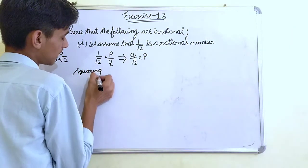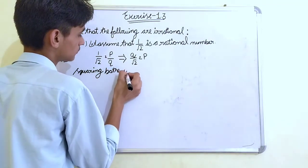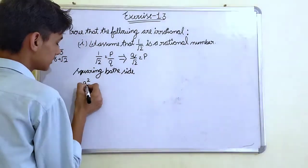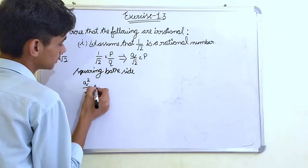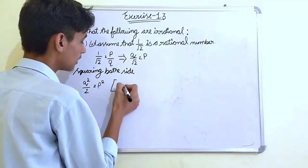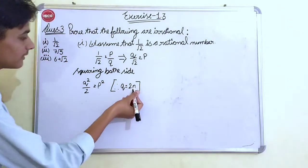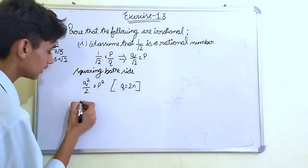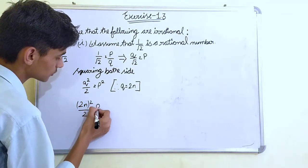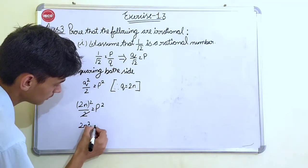Squaring both sides, Q square by 2 is equal to P square. From it, we conclude that Q is equal to 2N. We will put the value of 2N here, means the Q here. 2N whole square by 2 is equal to P square. 2 is get cancelled with the square. 2N square is equal to P square.